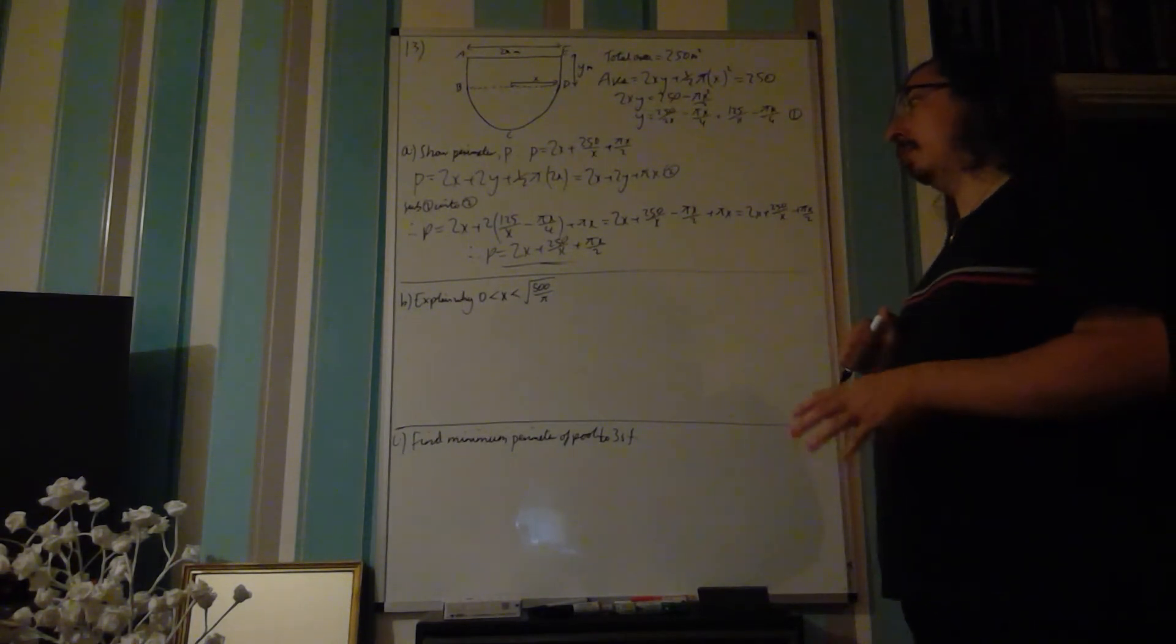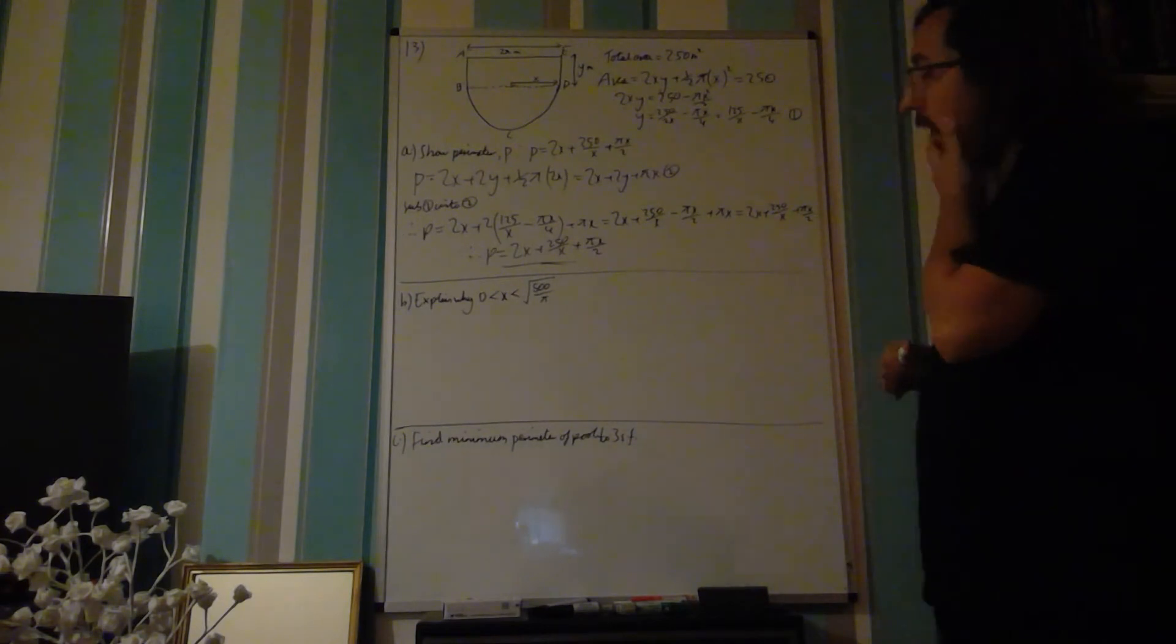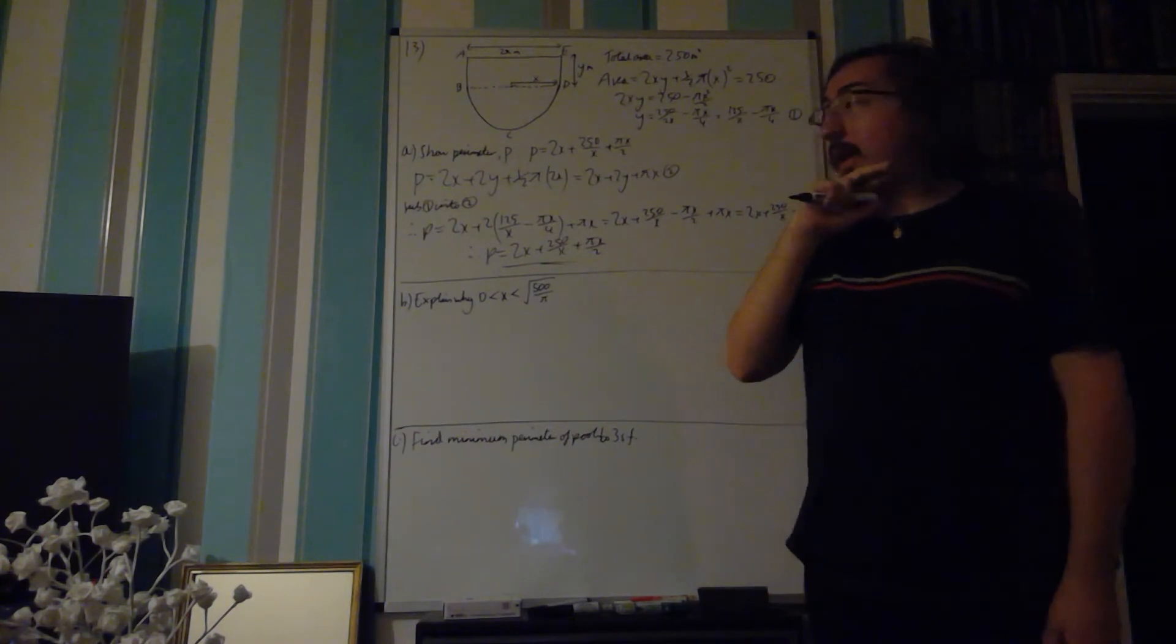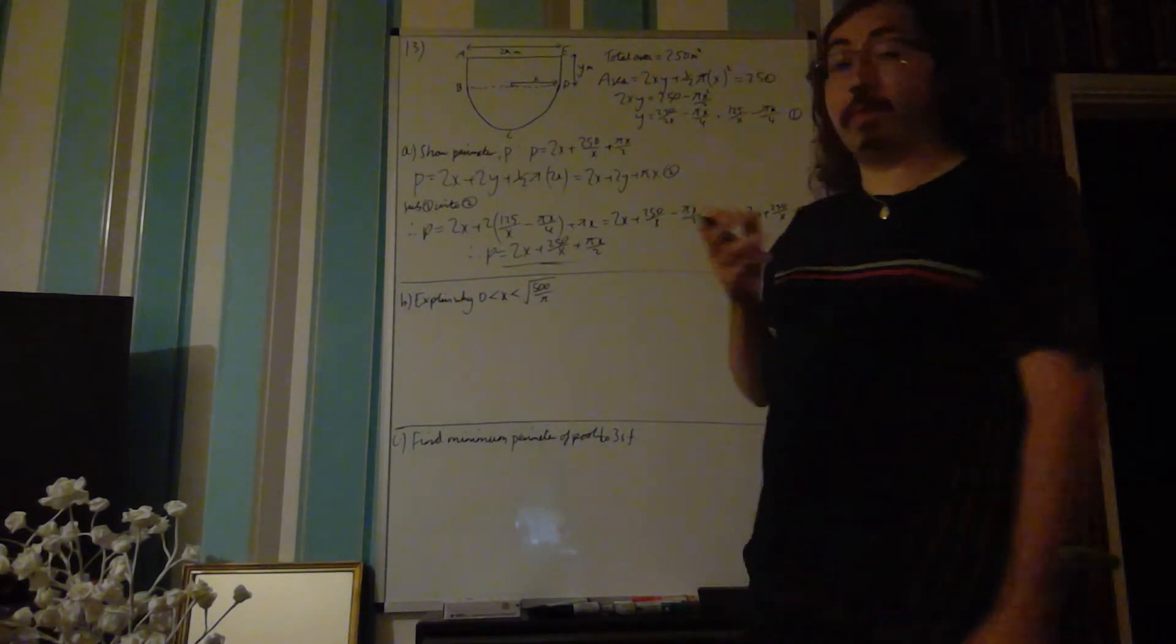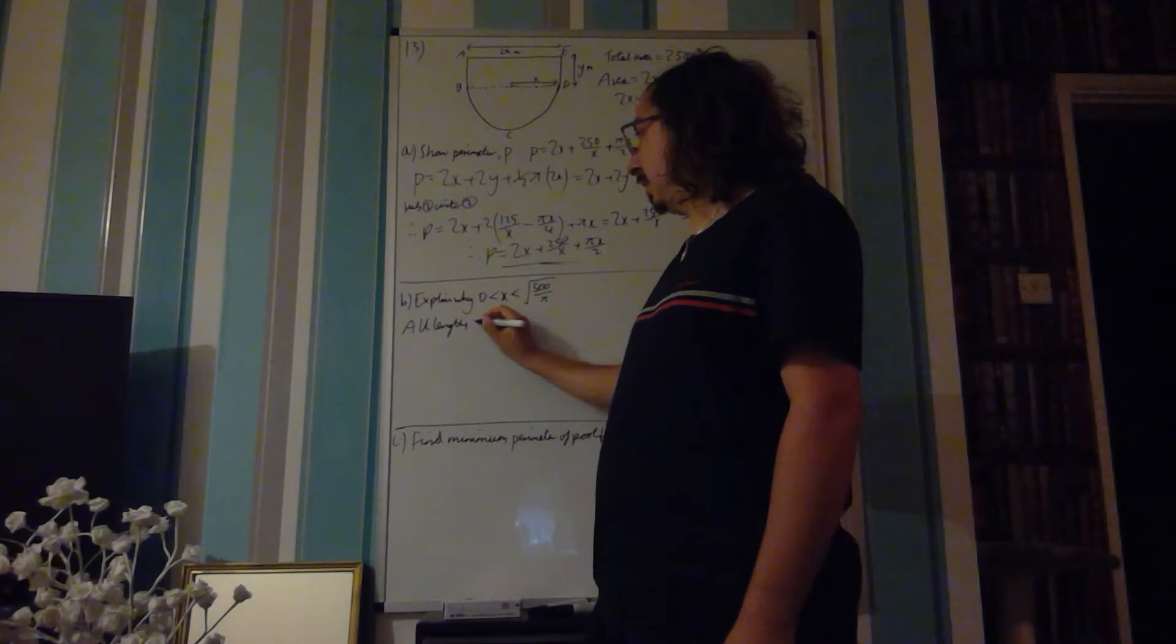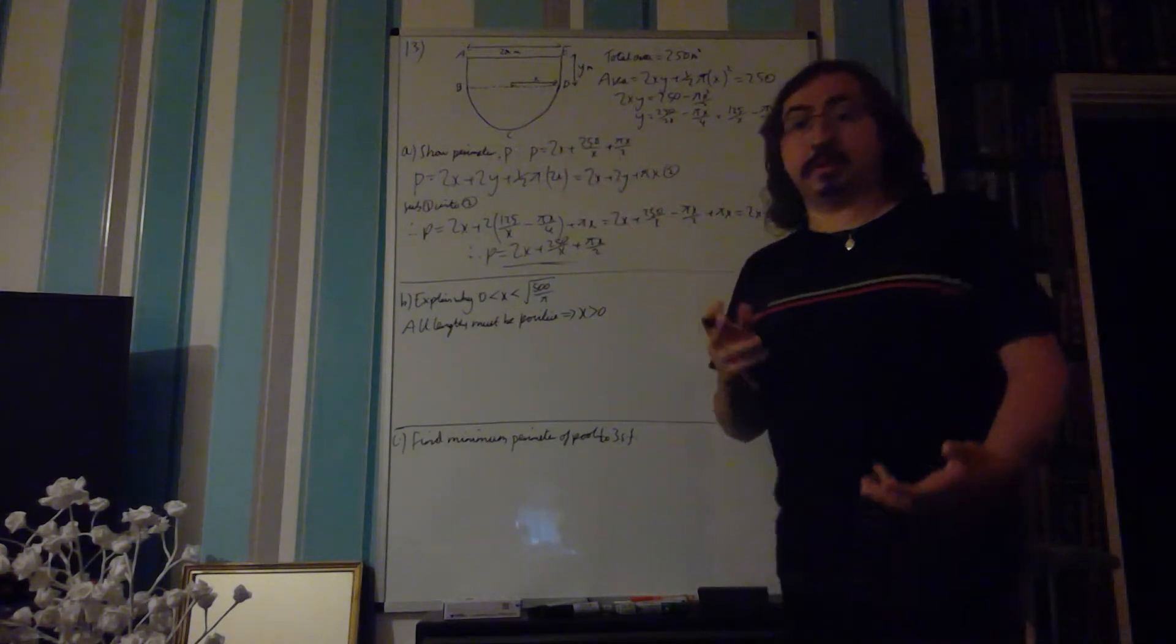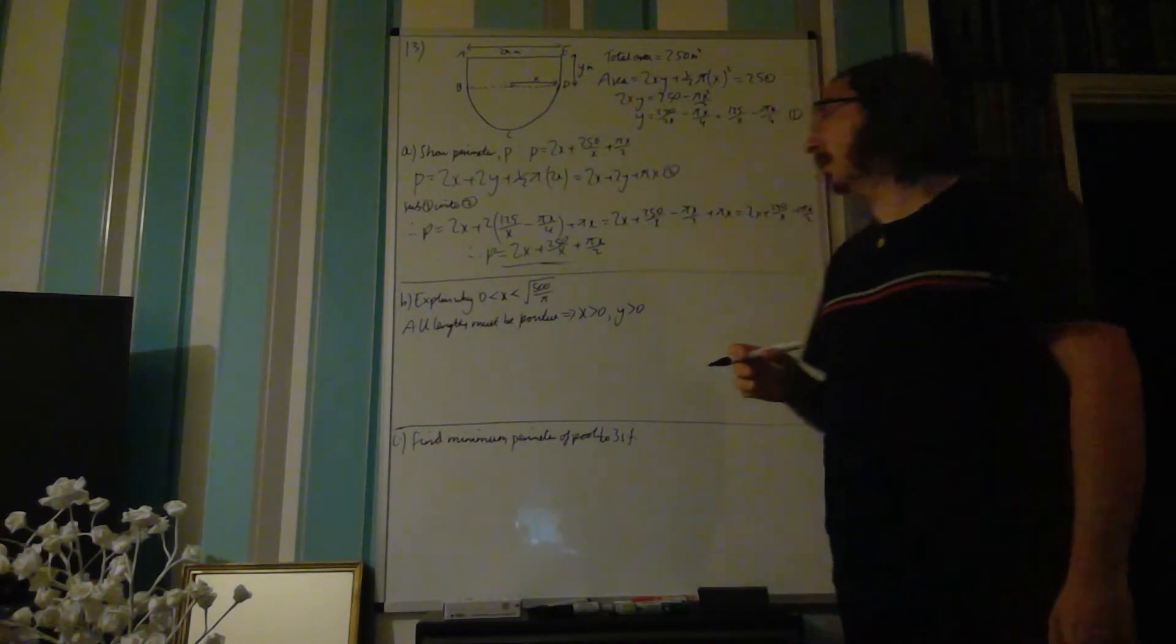Part b can be quite difficult. Part b says to explain why x is greater than 0, but x is less than the square root of 500 over pi. So it's placing a limit on what our x values can be. To do this, we need to look back at what the diagram says. And to start with, we need to think the x and y, what do they represent? Well, they represent lengths. And if they represent lengths, they must be positive. So, to start with, all lengths must be positive. Therefore, x must be greater than 0, as x is our radius. And y must also be greater than 0. y is this length here. Otherwise, it doesn't exist.